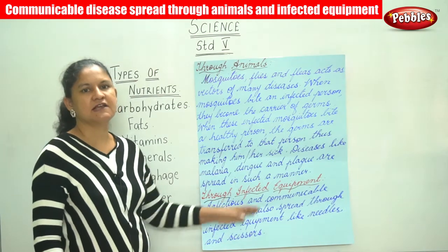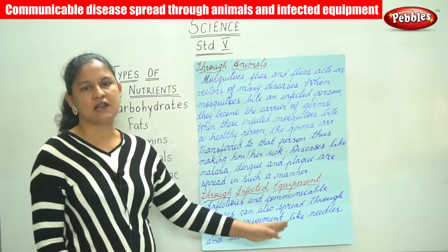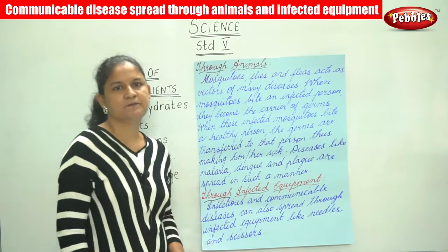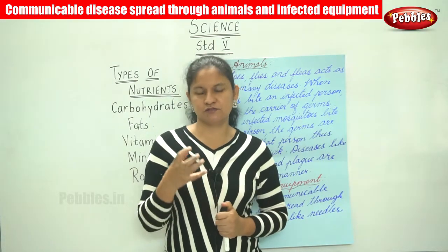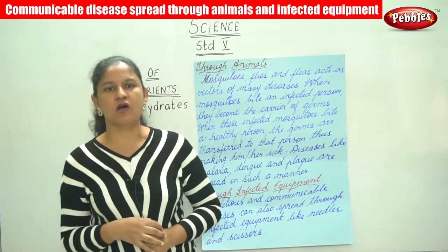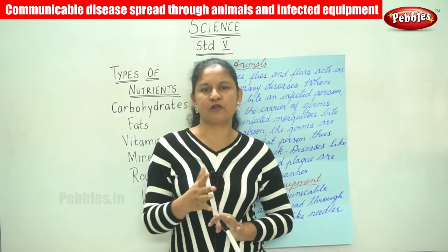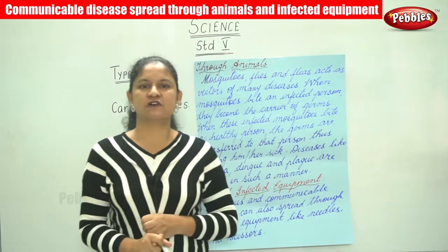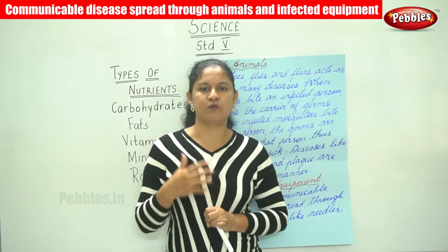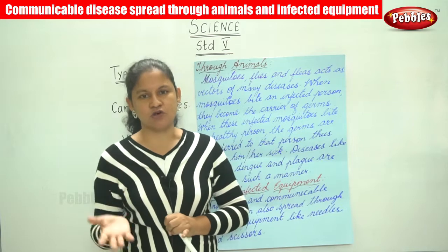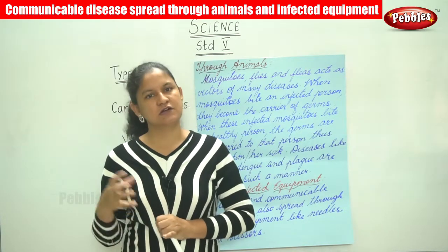Communicable diseases are diseases that can be spread through direct contact or by coughing and sneezing. These communicable diseases spread in various ways. The first is through infected persons or air — through direct contact. When one person has it, he passes it on to the next person by coughing or sneezing, or the germs remain on the clothes.